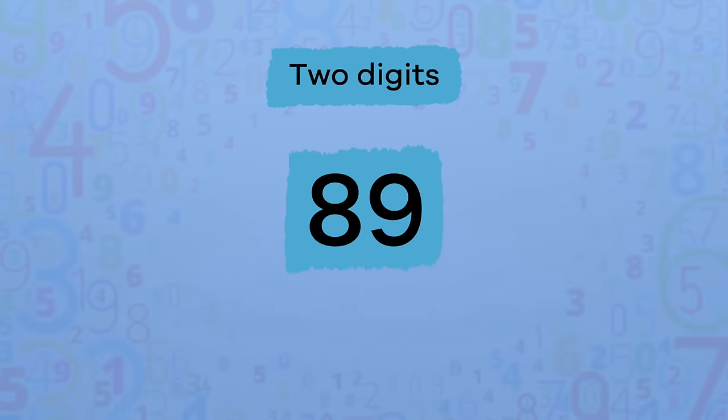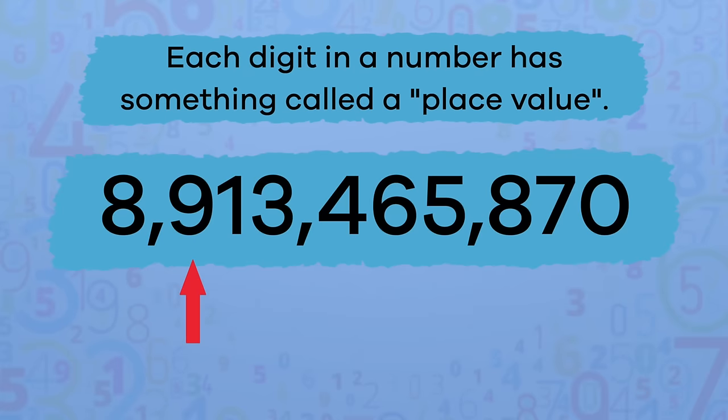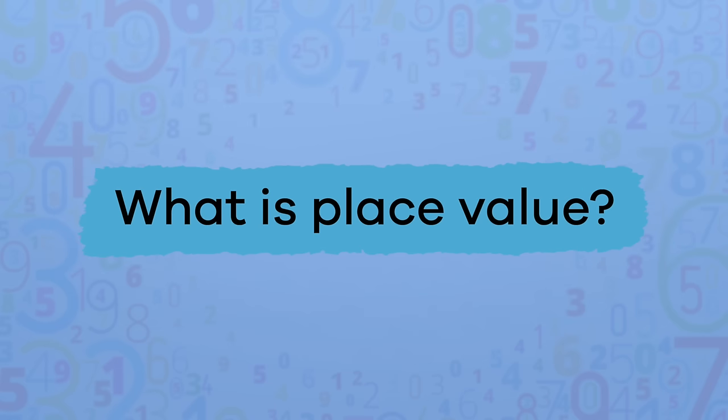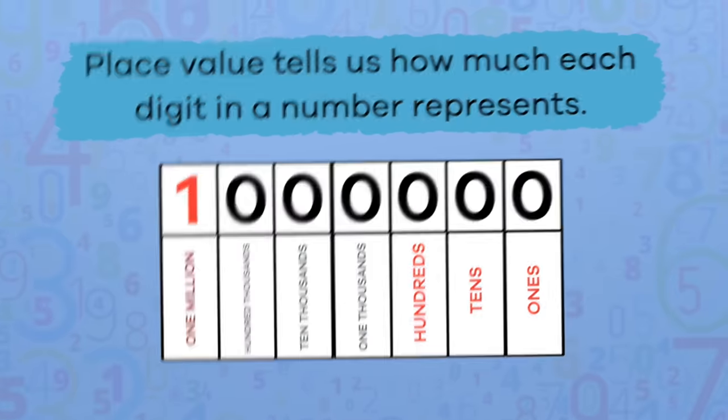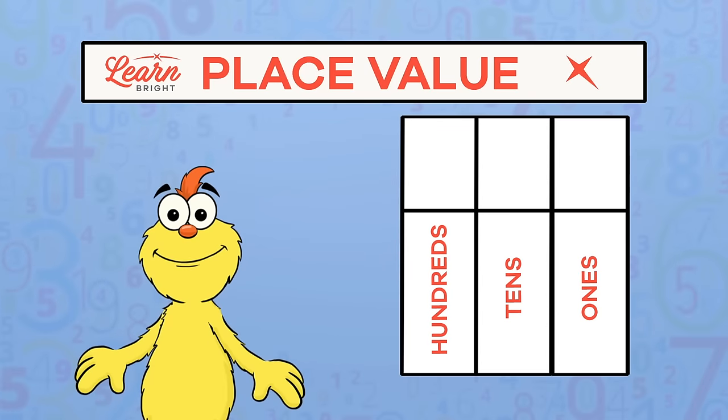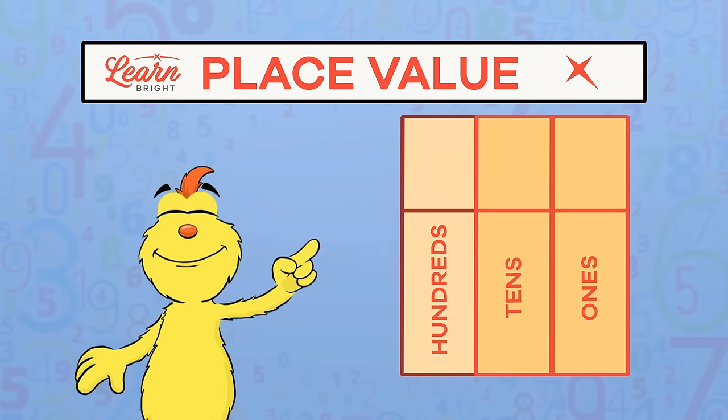Numbers can be made up of one digit, two digits, or many digits. Each digit in a number has something called a place value. What is place value? Place value tells us how much each digit in a number represents.